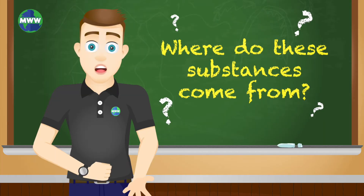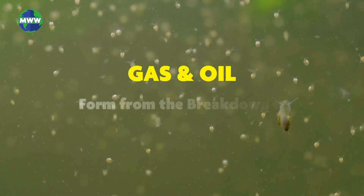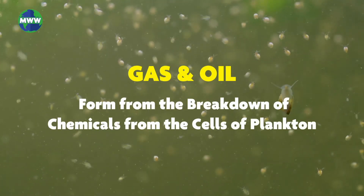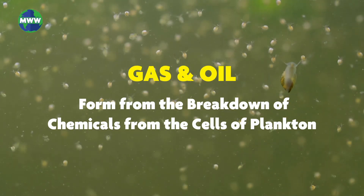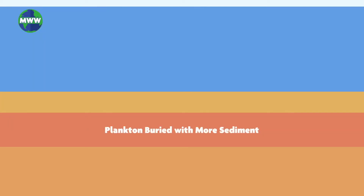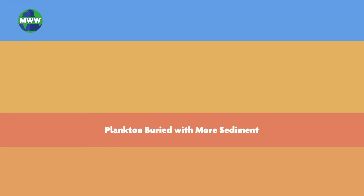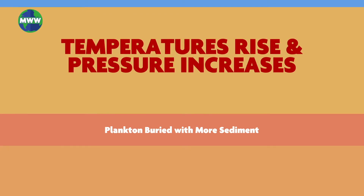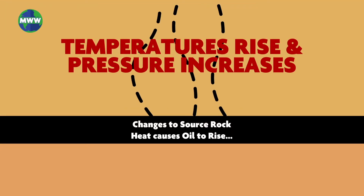Where do these substances come from? Instead of plant material like coal, gas and oil form from the breakdown of chemicals from the cells of marine critters called plankton. Plankton die and fall to the seafloor and are buried with sediment over time. As the plankton get buried, temperatures deep within the Earth's crust rise and pressure increases, causing the plankton to change to oil and gas.